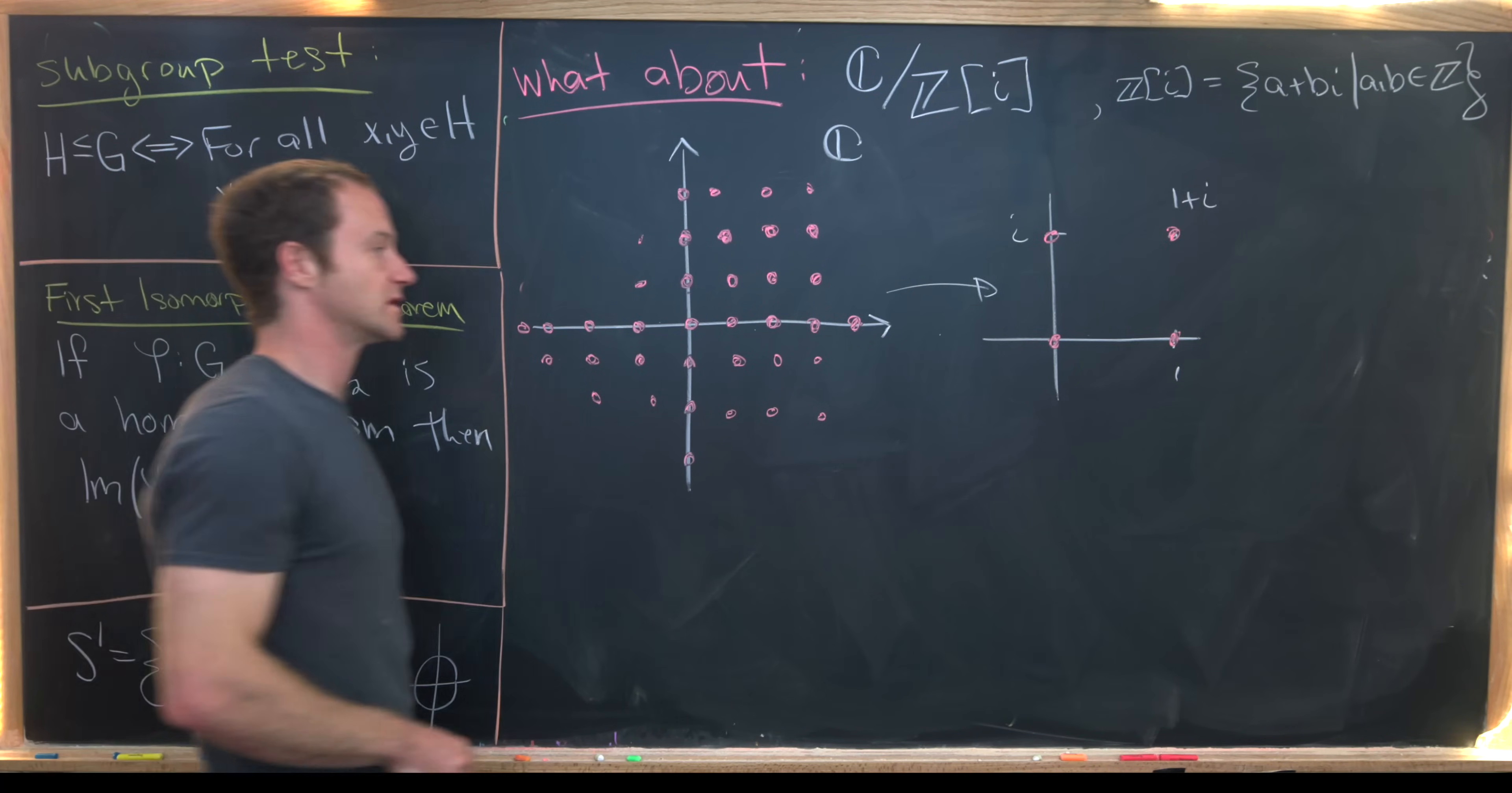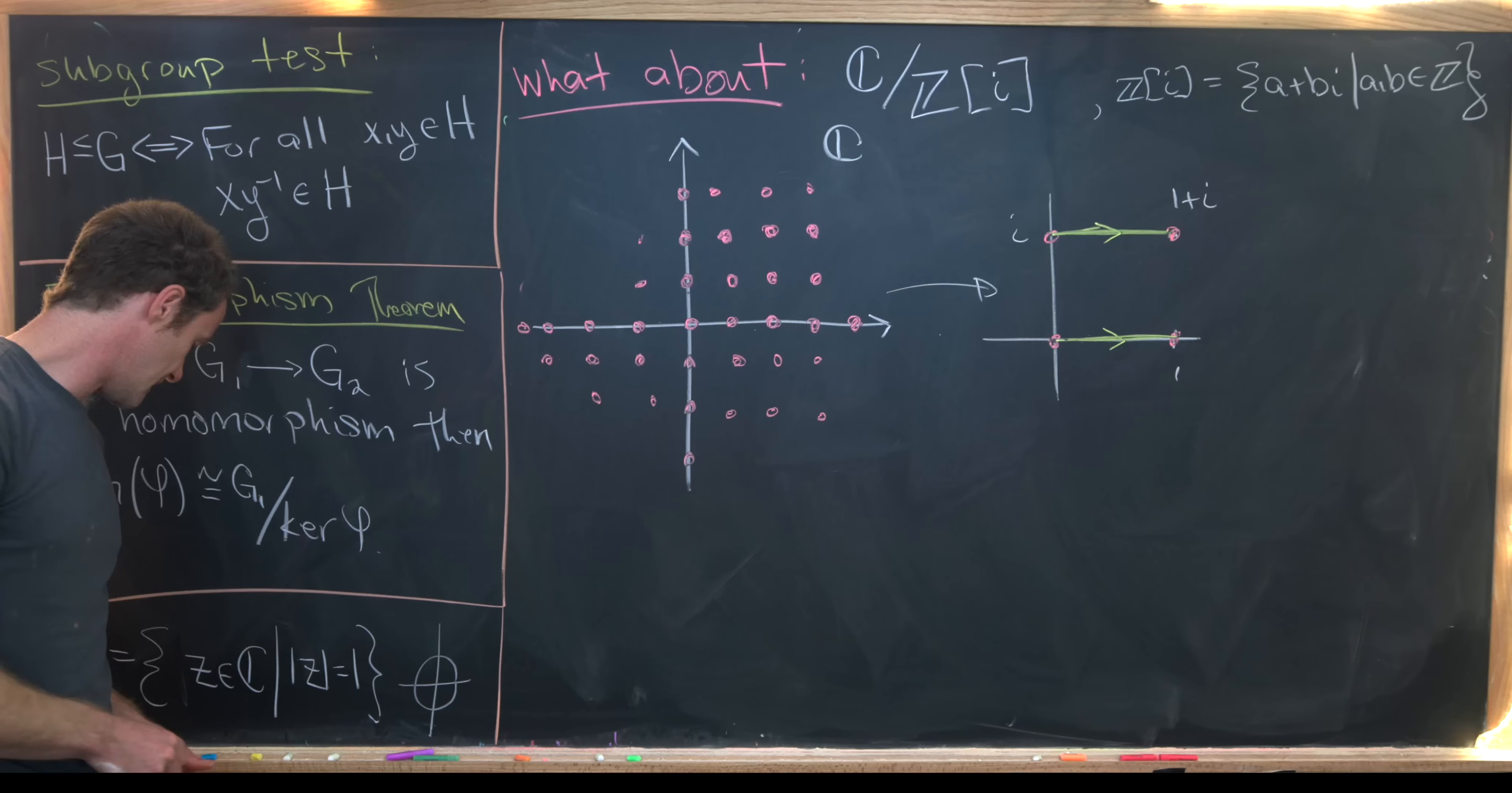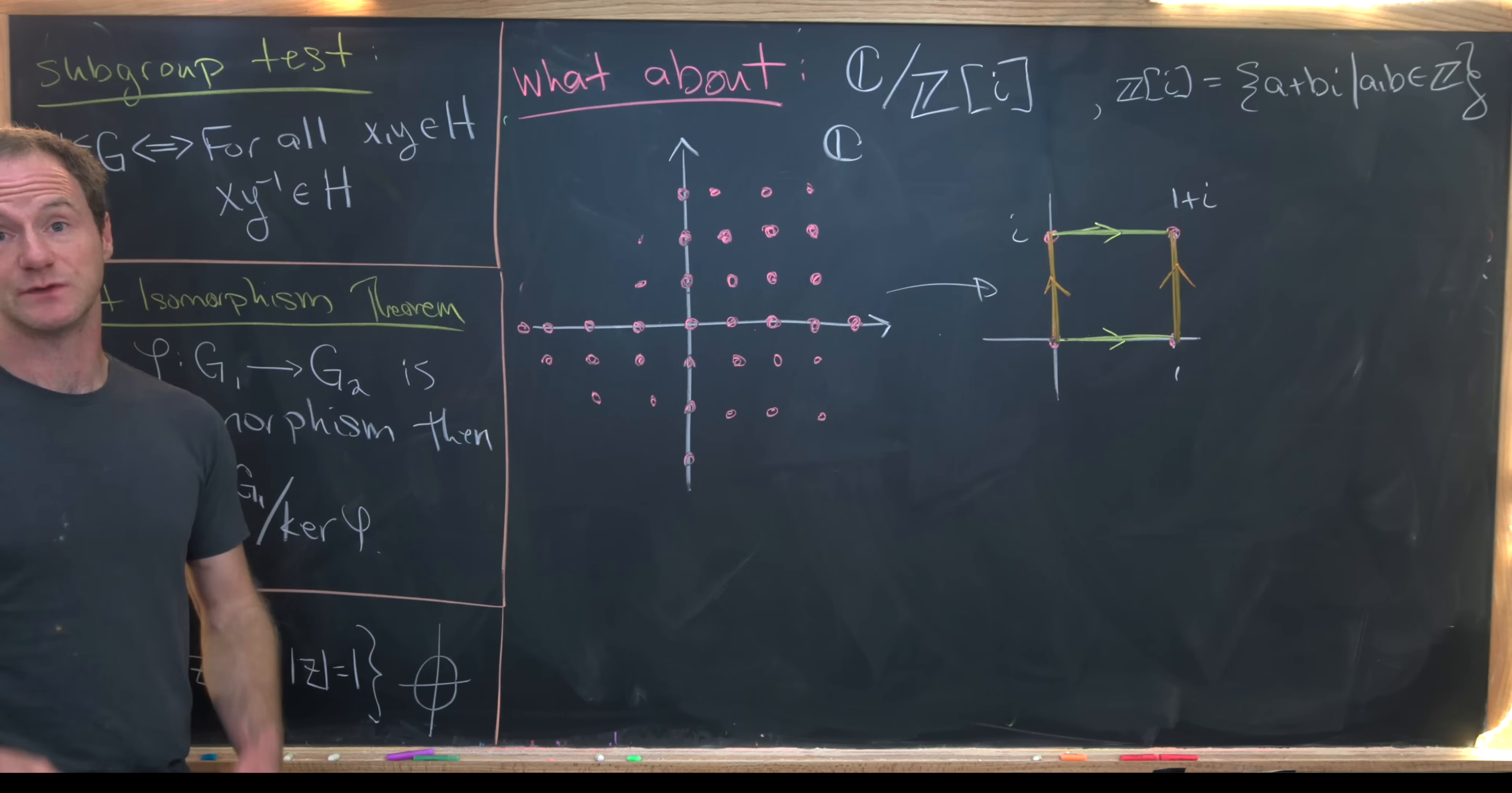So next we'll see that this line segment between zero and one will be identified with this line segment between i and one plus i. And why is that? Well, that's because these differ by an element of Z adjoining i. They differ by i. And then very similarly, this line segment between zero and i, this line segment between one and one plus i are also identified. And that's because they differ by an element of Z adjoining i, they differ by the number one. So that means we've got this identification.